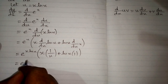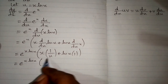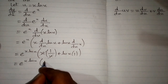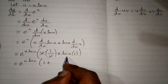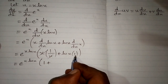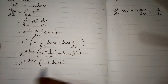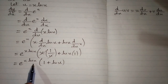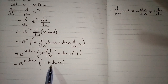So we have e to the power x times ln of x. After cancellation, we have 1 plus ln of x times 1 is ln of x. So the final answer is e to the power x times ln of x, multiplied by 1 plus ln of x.